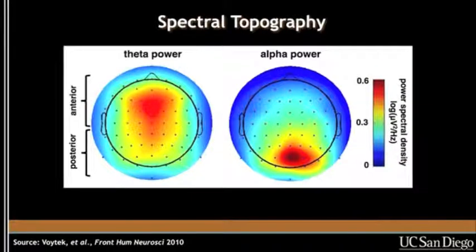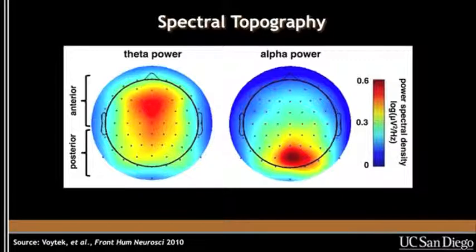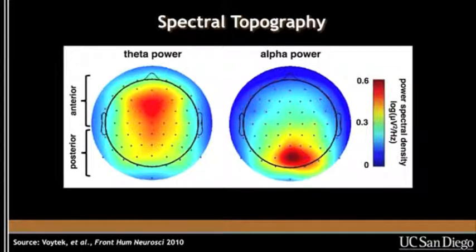In chapter three, you were introduced to EEG, scalp EEG, and the alpha rhythm, and saw that alpha power changes with cognitive, perceptual, and behavioral states. As you can see in this slide, if you look at the scalp topography of power for different frequency bands on the brain, you can see that theta power, which is 4 to 8 hertz, has a preferential frontal distribution, whereas alpha power, which is about 8 to 12 hertz, is preferentially strongest over the visual cortices.